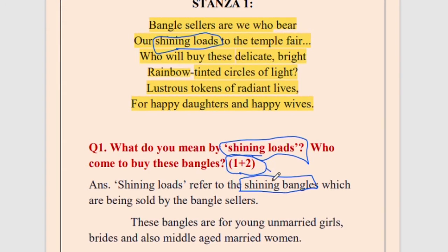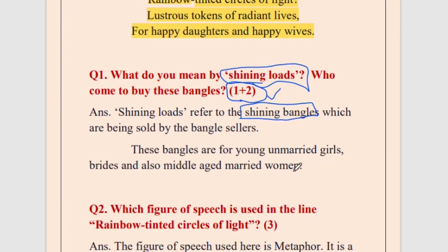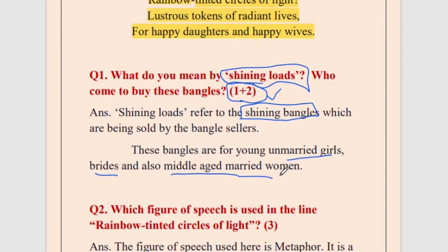The marks are written so you can understand how much to write for this answer. Question one, part A: the answer is simply 'shining bangles,' written in a complete sentence. One mark — half for 'shining,' half for 'bangles.' Next part: who comes to buy these bangles? The bangles are sold for young unmarried girls, also called maidens; brides who are going to be married soon; and middle-aged married women. These are the three kinds of women. Two marks here.